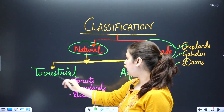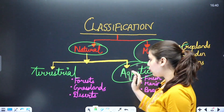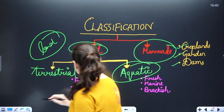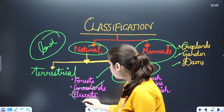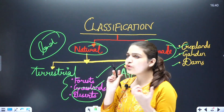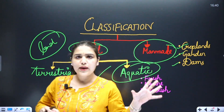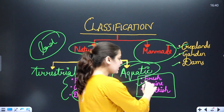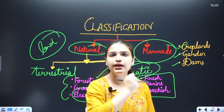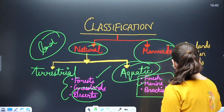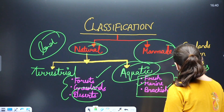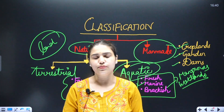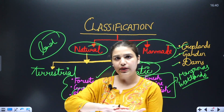For natural ecosystems, they are classified into terrestrial and aquatic. The terrestrial ecosystem comprises things on land — our forests, grasslands, and deserts. When we talk about aquatic ecosystems, we have freshwater, marine water, and brackish water, which includes wetlands, mangroves, and estuaries. So mangroves and different wetlands and estuaries comprise our brackish water ecosystem, which is part of the aquatic ecosystem.